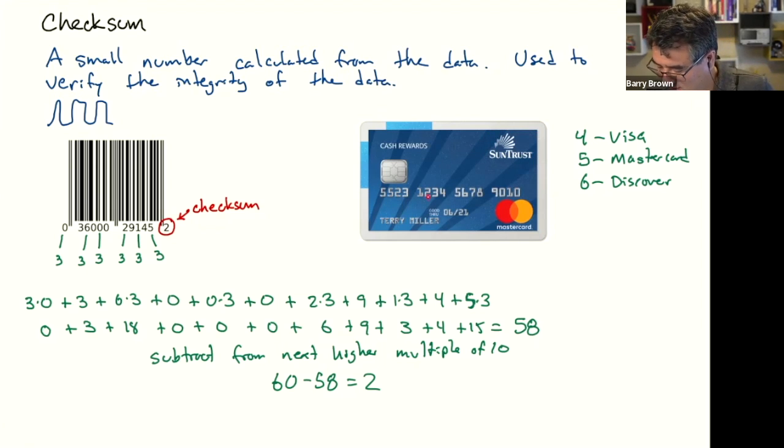And then the remaining digits, except for the last one, would be the account number within that bank. So all the credit cards issued by SunTrust would have the next few digits be the same. And then it's the remaining digits that would be changing for each individual card.